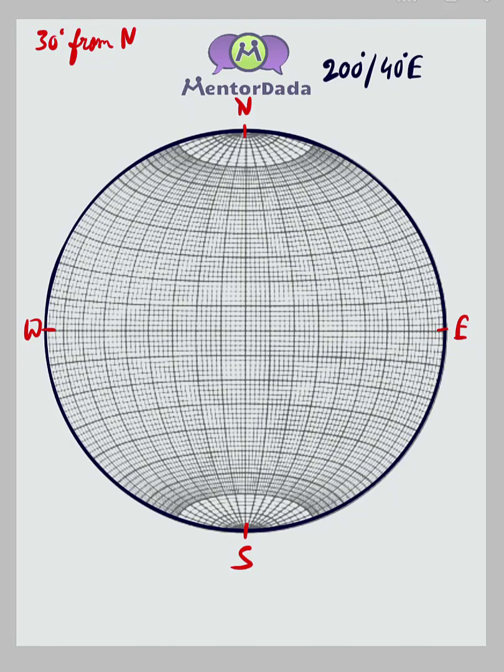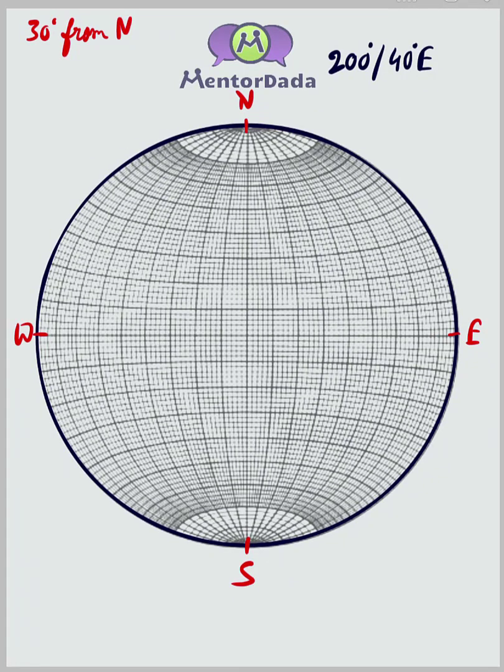After that we need to draw the plane. The orientation of the plane as we can see is 200 degrees slash 40 degrees east. So we will mark the 200 degrees first because that is the strike of the plane around here. This is 200 degrees because this is 190 and this is south, this is 180 degrees.